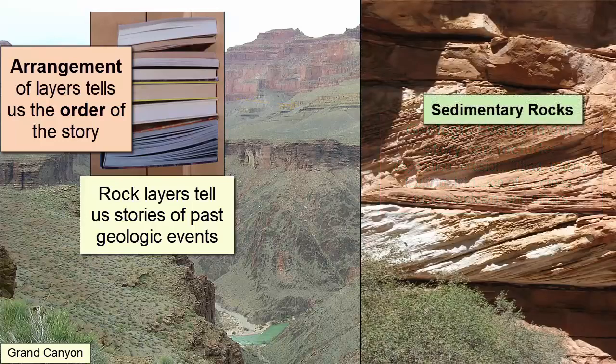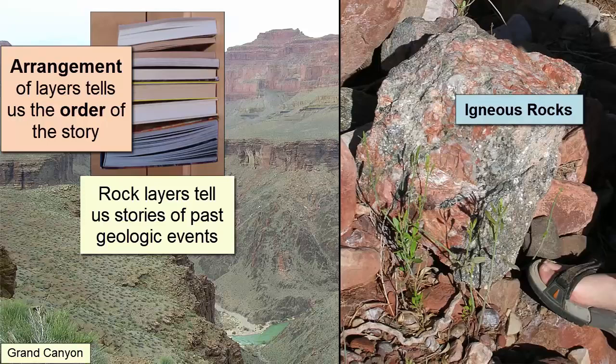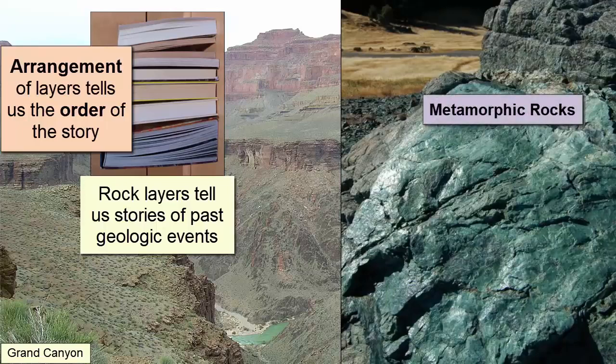Sedimentary rocks represent events of deposition. A sandstone records an event of sand deposition, either on a shallow continental shelf, beach, or as sand dunes in the desert. Igneous rocks represent volcanic episodes occurring in an area — either subduction zone volcanism, divergent plate boundary volcanism, or hotspot volcanism. Metamorphic rocks record the area being subjected to high temperatures and/or pressures, either from a nearby magma chamber, subduction zone, deep burial, or collision of plates.